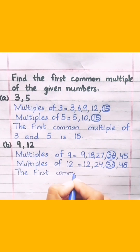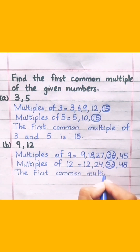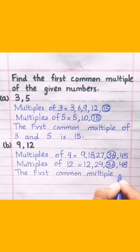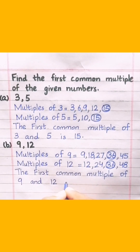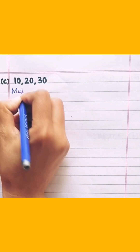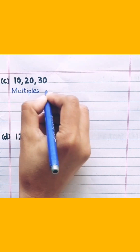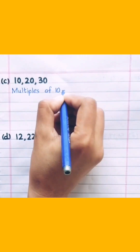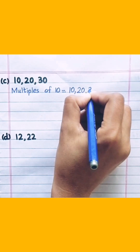The first common multiple of 9 and 12 is 36.